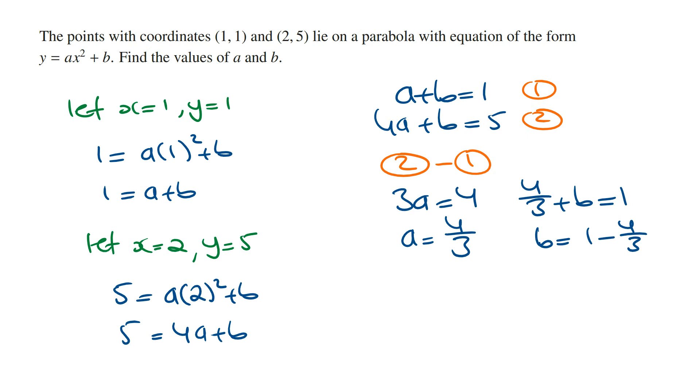1 - 4/3 is the same as 3/3 - 4/3, and so this is -1/3. Therefore, the rule of the parabola is going to be y = (4/3)x² - 1/3.